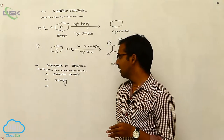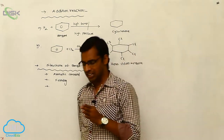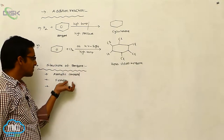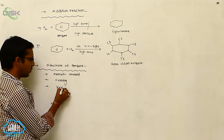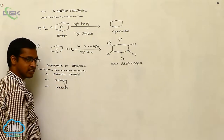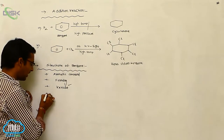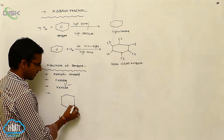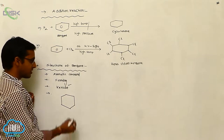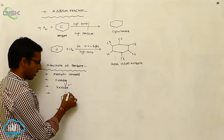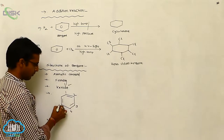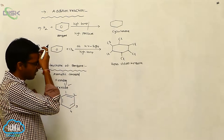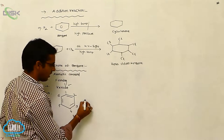The benzene structure was proposed by Kekulé. According to Kekulé, benzene contains six carbons in a ring with three pi bonds alternating — positions one through six — and these pi bonds alternatively undergo delocalization.